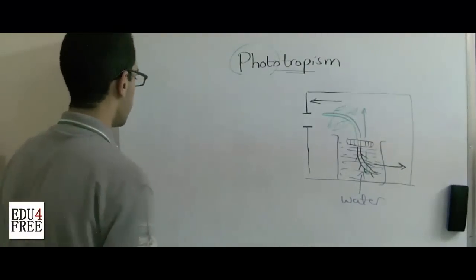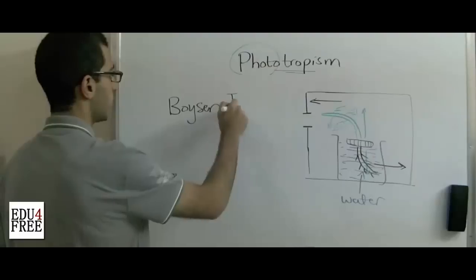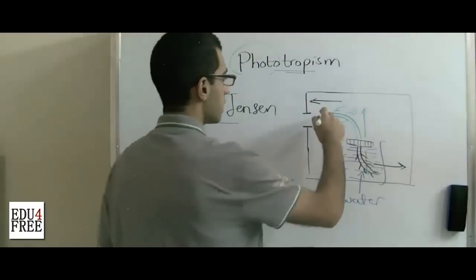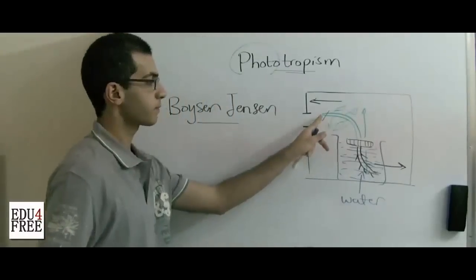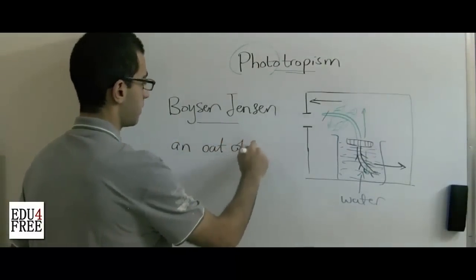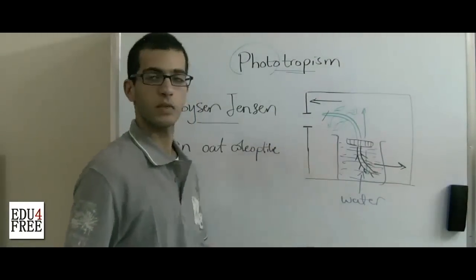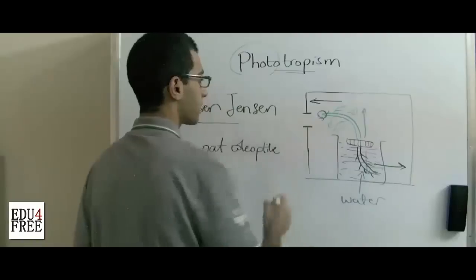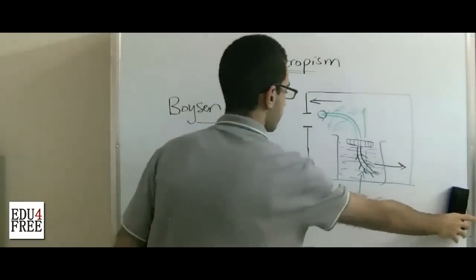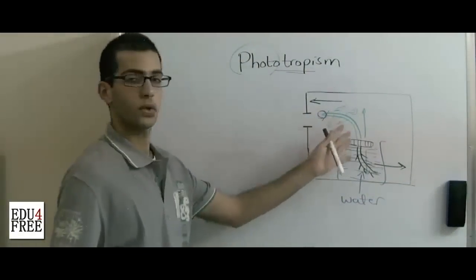Research was done and there was a scientist called Boysen-Jensen. This scientist cut the small part of the tip of the stem of an oat coleoptile. So what he observed is when he cut this small tip of the stem, no curvature took place. And when he returned this tip again by using gelatine, the curvature occurred. Just like that.